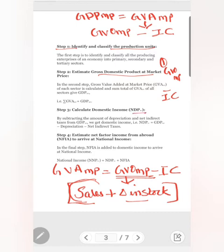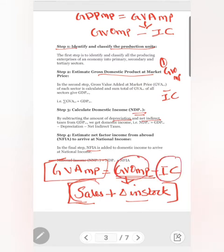In order to get domestic income, subtract depreciation and net indirect taxes. Further, to arrive at national income, add NFIA to domestic income. In summary: find gross value of output at market price, subtract intermediate consumption to get GVA at MP, then apply the basic conversion steps to find national income.